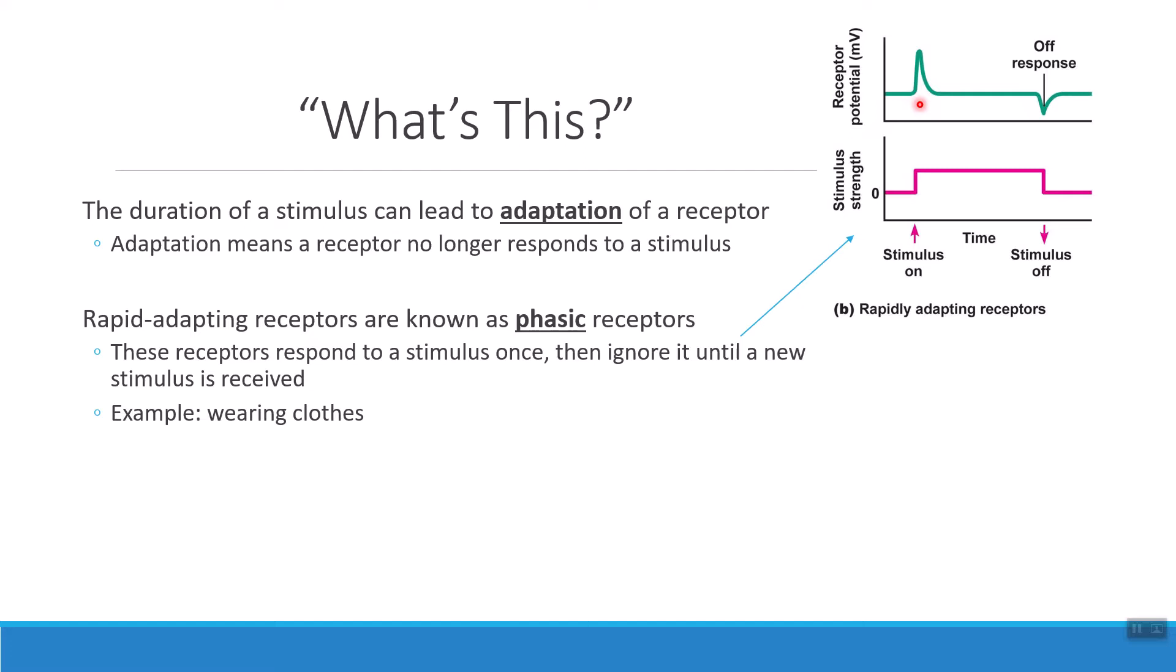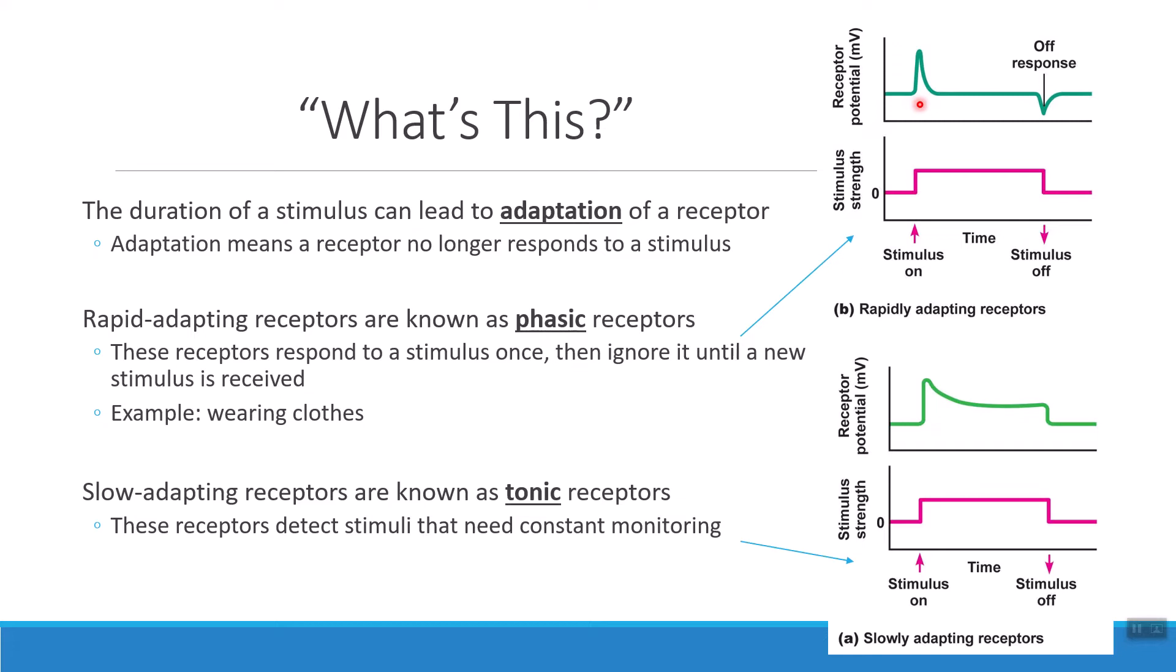But we also have in the body what are called slow adapting receptors. And slow adapting receptors, also known as tonic receptors, are the type that will constantly keep detecting information. So we use tonic receptors for monitoring things like your blood pressure or how much pain you're in. These are things that I need to keep a constant eye on because if my blood pressure gets too high or too low, that's problematic for me. If my pain level is going up, I need to deal with that. So notice that when I receive this stimulus and this stimulus sticks around just as long as the other one did, my neuron's not going to completely shut off like it did up above. A tonic receptor will continue to send some stimuli, continue to let the brain know that it's detecting things until that stimulus goes away. Tonic and phasic receptors, the two ways that we can detect information that lasts for a long time.